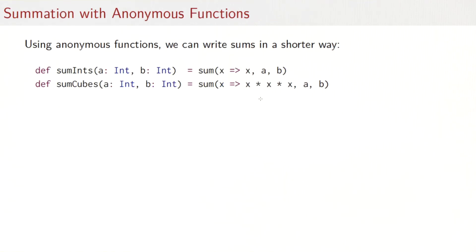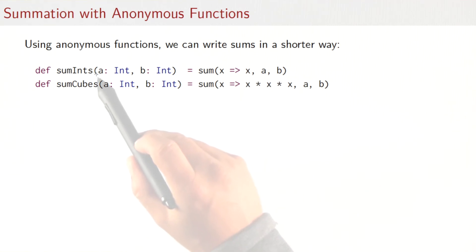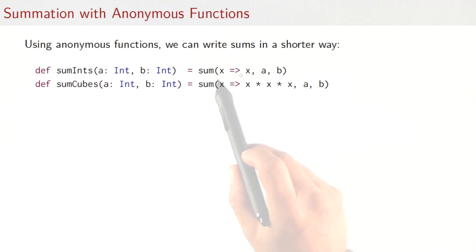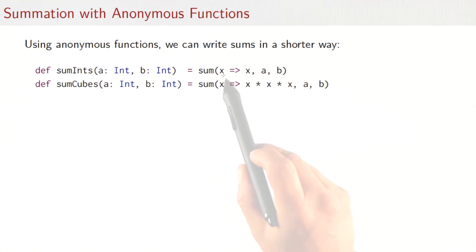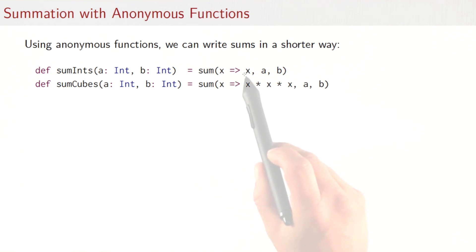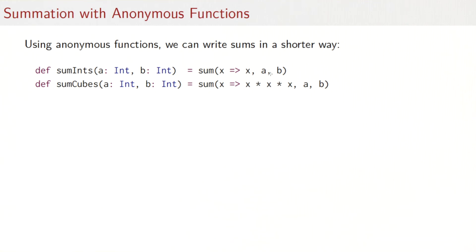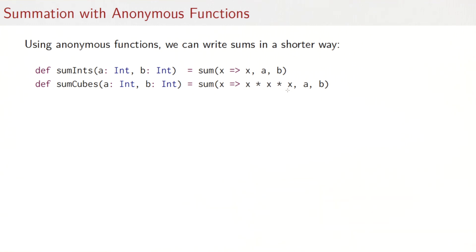To come back to the sum ints and sum cubes example, using anonymous functions we can write these in a shorter way. Sum ints would be simply sum where the function we pass is the identity function written as x arrow x, and the bounds are the parameters. Sum cubes would have as the function parameter x arrow x times x times x. And if we do that, we do not need the auxiliary definitions of identity or cube anymore.